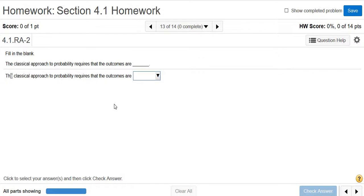In this video, we're just going to go through some simple examples. The classical approach to probability requires that the outcomes are equally likely.